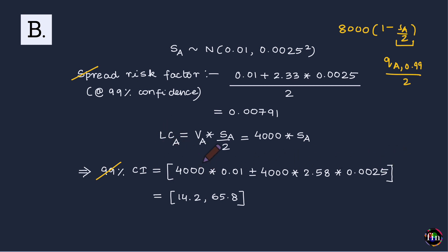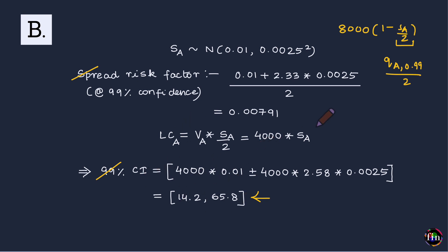Since S_A is a normally distributed random variable, 4,000 × S_A is also normally distributed. The 99% confidence interval is: 4,000 × 0.01 ± 4,000 × 2.58 × 0.0025, where 2.58 is used because this is a two-tailed confidence interval. This gives the 99% confidence interval for the liquidation cost of stock A.